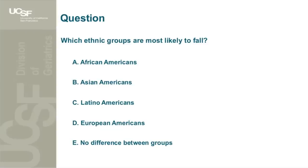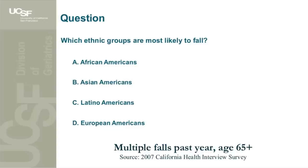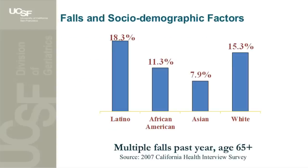The majority answered no difference, when in fact Latinos are the most likely to fall, according to the 2007 California Health Interview Survey. Latinos have the most falls, whites are next, and interestingly, Asians the least. Anecdotally, we've recently found there are several ways to ask about falls in Chinese, so their prevalence may not be lower — it may be that we're not asking the right questions, leading to under-reporting.